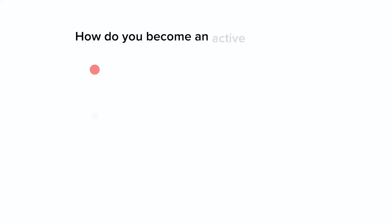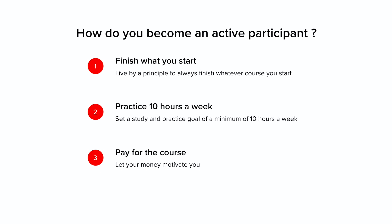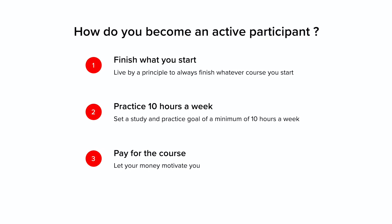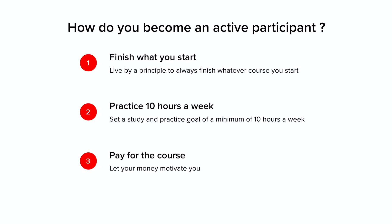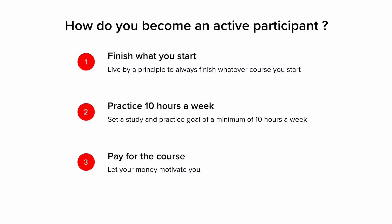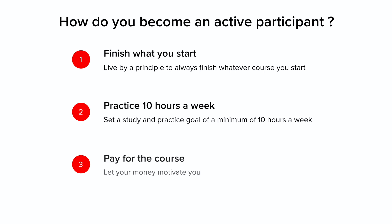The fourth type are active participants — learners who fully intend to participate, including consuming content, taking quizzes and exams, completing assignments, peer grading, and actively participating in discussions via forums, blogs, and social media. As a beginner in data analysis, you want to be an active participant, or at least a passive participant. To become one: first, live by the principle to always finish what you start; second, set a goal to learn a minimum of 10 hours a week; and third, if you have the resources, pay for the course for extra motivation.